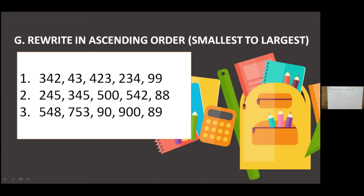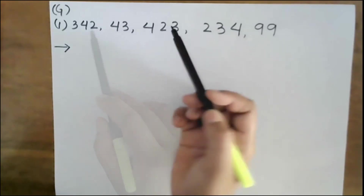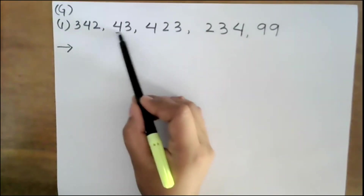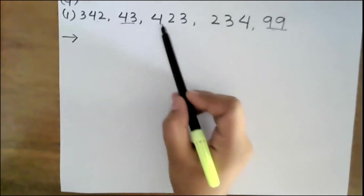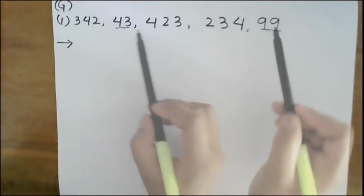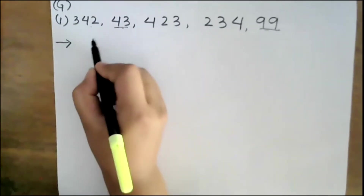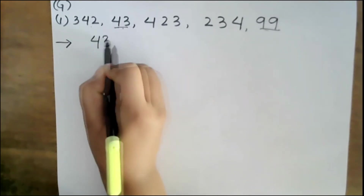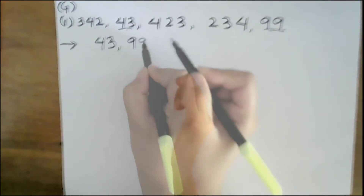Out of these, which is the smallest number? If you look here, there are only two-digit numbers — 43 and 99 — and the other three are three-digit numbers. So you look at the two two-digit numbers: which one is smaller? 43 is smaller, so you write 43 first and next is 99. These two are done.